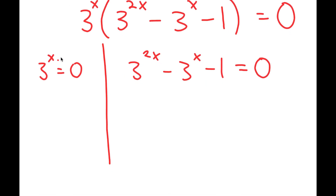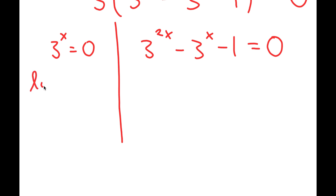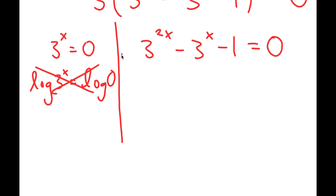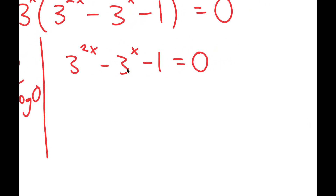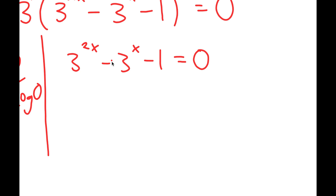For 3 to the power of x equals 0, I'm going to take the log on both sides. So I get log of 3 to the power of x is equal to log 0. But log 0 is undefined, so there is no solution to this equation. Also, you can't raise a positive number to any power and make it equal 0, so there's no solution. So all that we're left with is 3 to the power of 2x minus 3 to the power of x minus 1 equals 0.